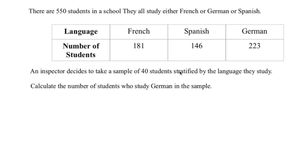The final question: there are 550 students in a school who all study either French, German, or Spanish. French has 181 students, Spanish has 146 students, and German has 223 students. An inspector decides to take a stratified sample of 40 students by the language they study, meaning the sample will be proportional — so there will be the most German students and fewest Spanish students.